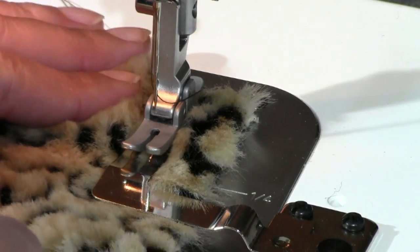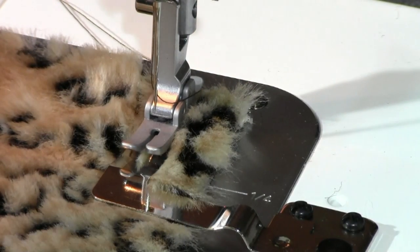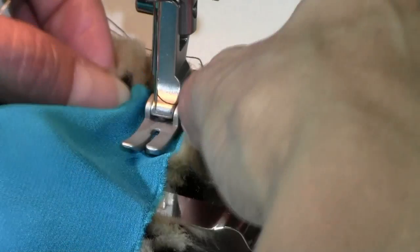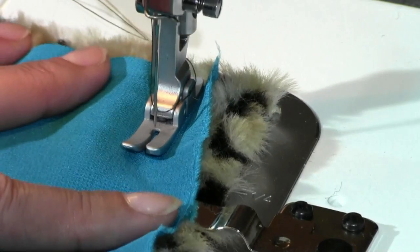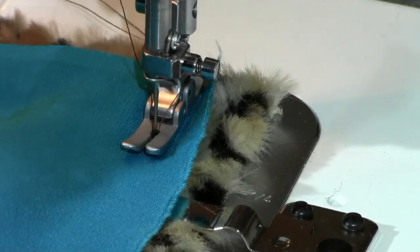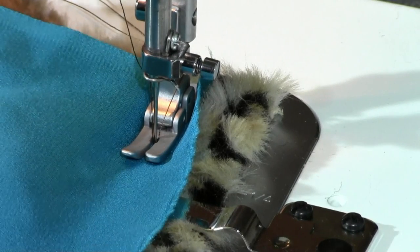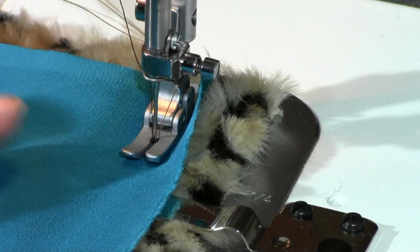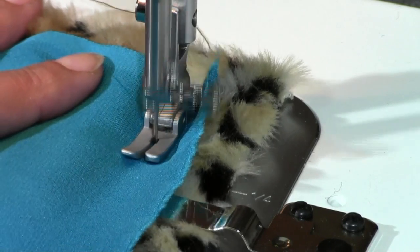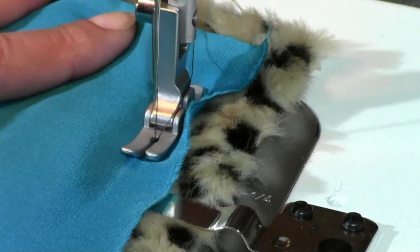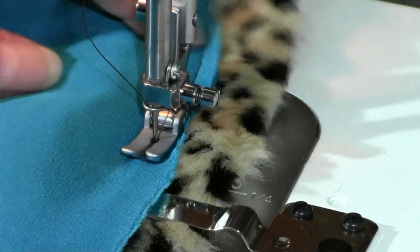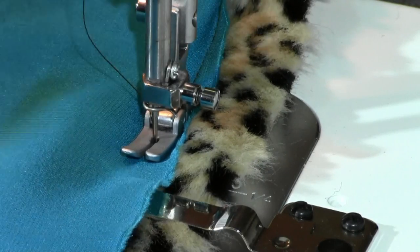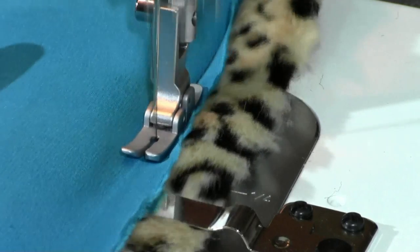So I'm going to make a wide seam allowance here, just so you can see everything. Slide this through. So there we have the faux fur. Here we have some silk. I'm just going to start sewing. Just put your presser foot down as normal and just start sewing. Now I have the machine set at like a 4.0 stitch, just to start out, so you can see it better.